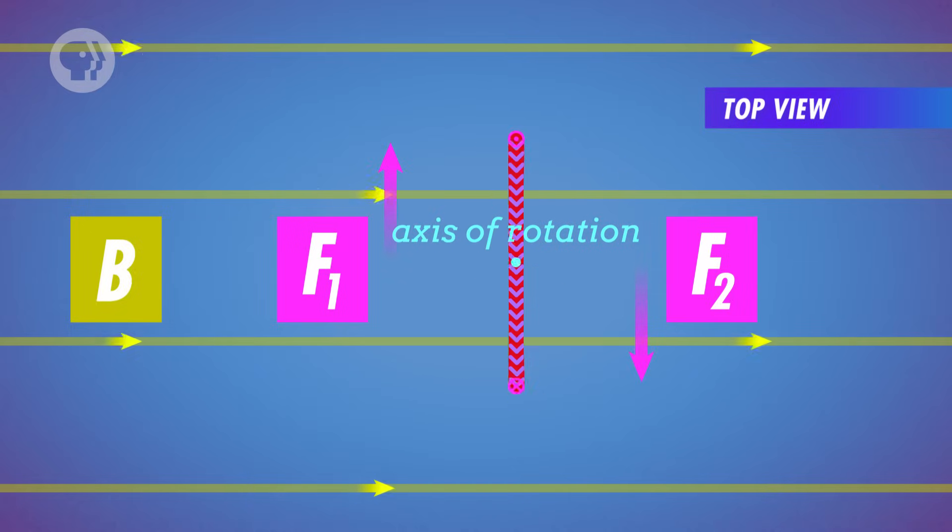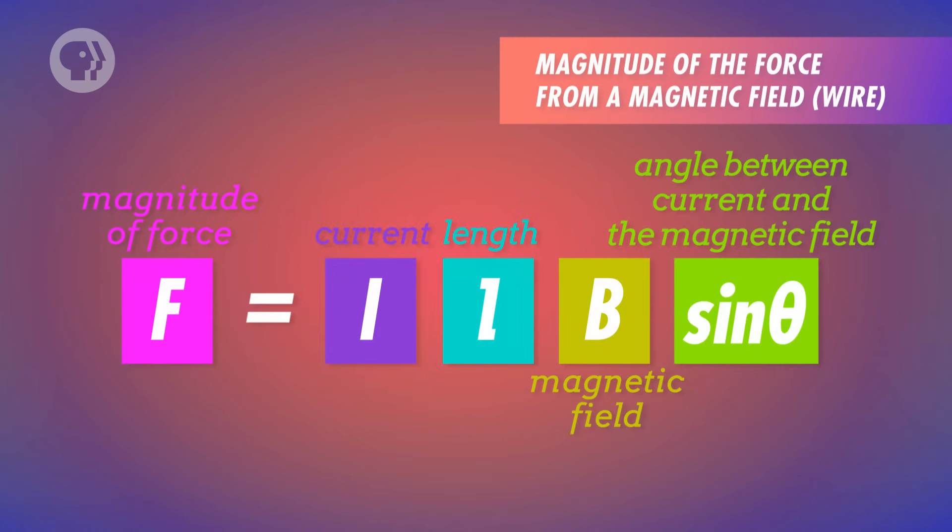A force that turns the loop. From the last episode, we know that the force from the magnetic field on the wire will be equal to the current times the length of that part of the coil times the magnetic field.